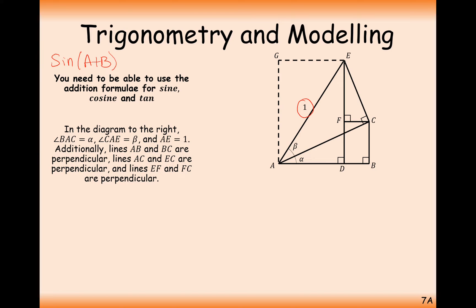The key triangle that we're going to look at here is this one, because it's got an angle at the bottom left of α+β. So we're looking for the right-hand side here — that's the opposite side, so whatever that is, that's going to be our rule for sin(α+β). And whatever length is on the bottom here, that's going to be our rule for cos(α+β).